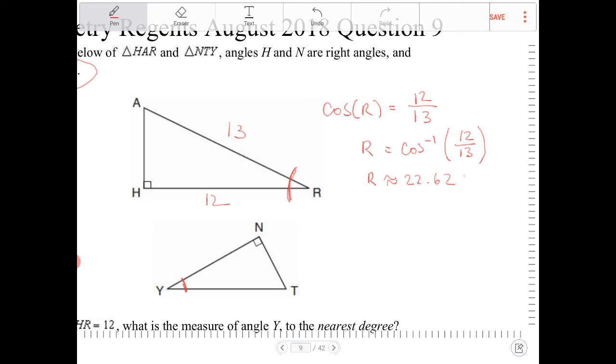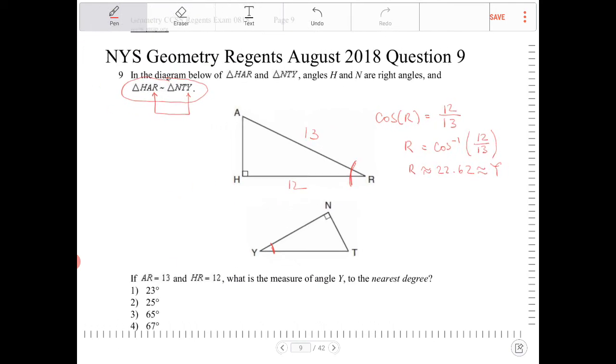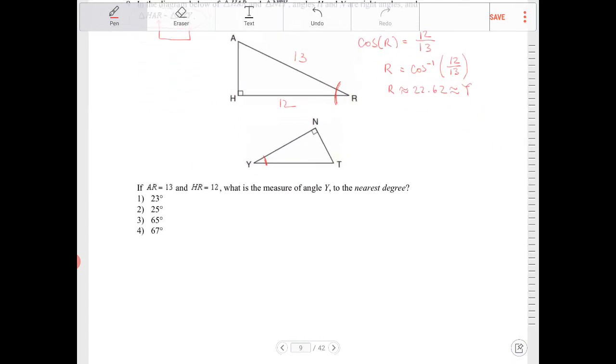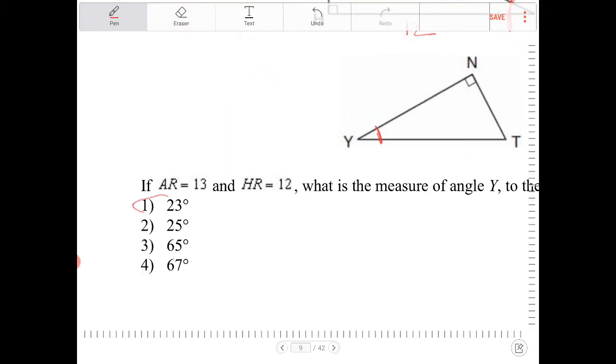Therefore, that's what Y will approximately be equal to. Round it to the nearest degree, so that's approximately 23. Y is approximately 23 to the nearest degree. And that would be option one.